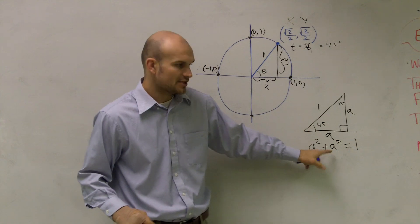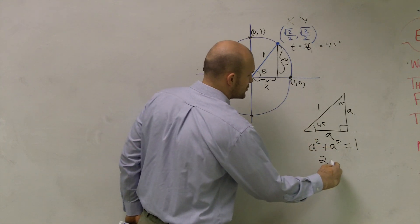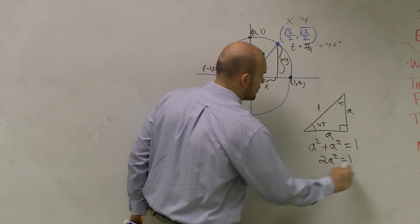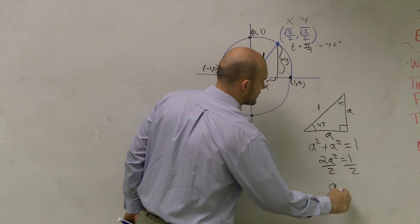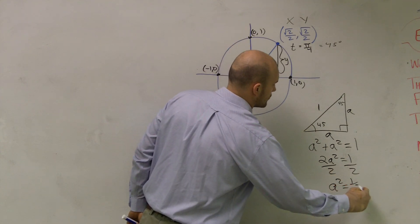Now I can combine those to 2A squared equals 1. Divide by 2. A squared equals 1 half.